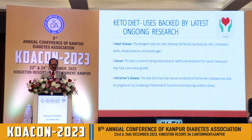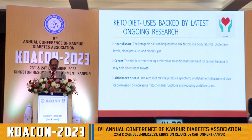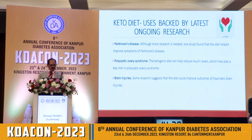For heart diseases, ketogenic diet can help improve risk factors like body fat, HDL cholesterol, blood pressure, and blood sugar, but with caveats we will discuss later. It is being tried in cancer patients because glucose is not reaching the cancer cells, preventing their growth, and ketones may help in shrinkage of tumor cells. KD is also being widely used in Alzheimer's, Parkinson's, PCOS, and brain injury. There is a plethora of cases where this ketogenic diet is being used.